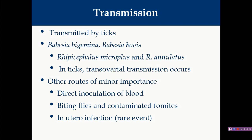Transmission depends on the species of Babesia. Babesia divergens can survive in tick populations for at least four years even if cattle are not present. Other minor routes include direct inoculation of blood, biting flies acting as mechanical vectors, and in rare cases, in utero infection is possible particularly in cattle - when cattle are pregnant, there is a chance that infection will pass to the developing fetus.